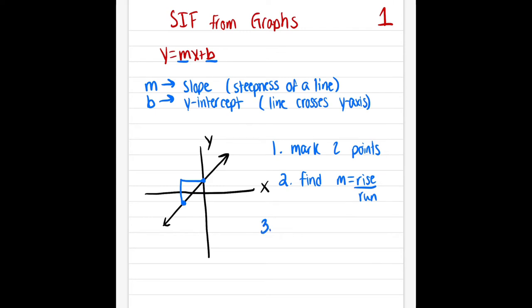Step three is going to be to find the Y-intercept, which is where our line is going through the Y-axis. And where that point is is where our line crosses the Y-axis, so that's going to be a number. Our last step, step four, is to write our Y equals MX plus B equation, where M and B are supposed to be a number.